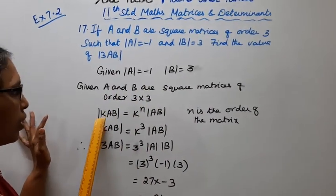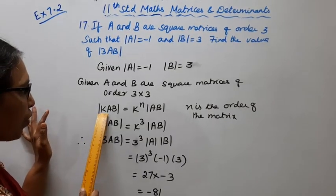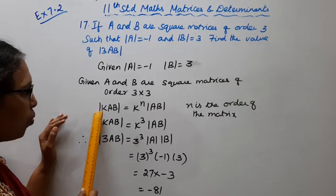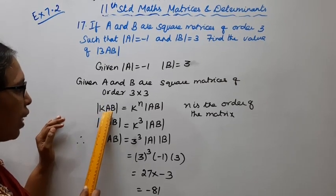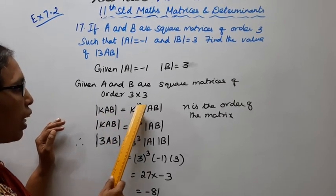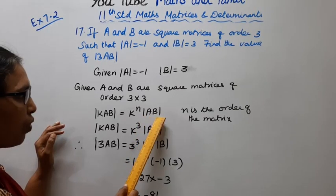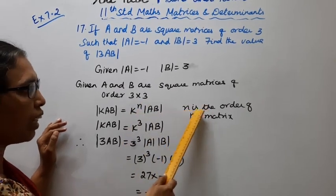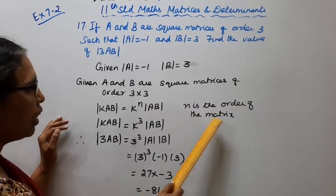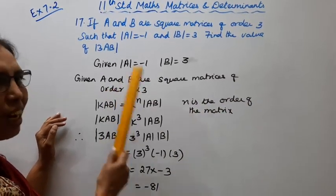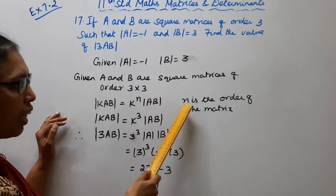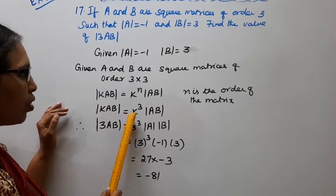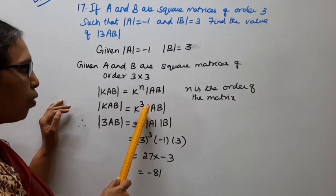In determinant rule, determinant of k into AB—this is very important. Determinant of kAB equal to k power n into determinant of AB. This is the order of the matrix. This order is 3 cross 3 matrix. It's the order of the matrix.